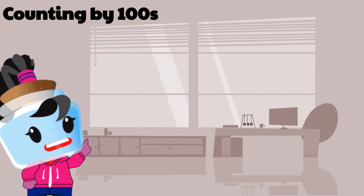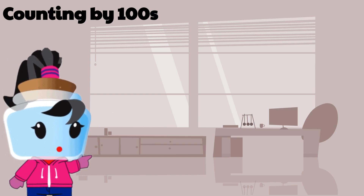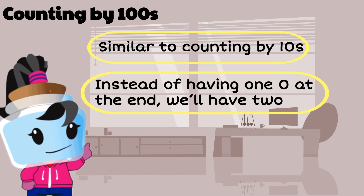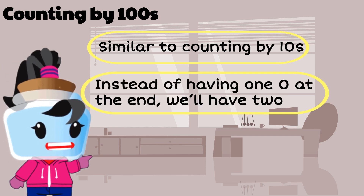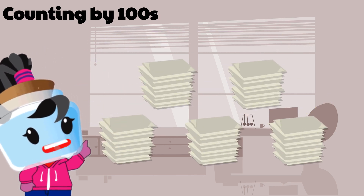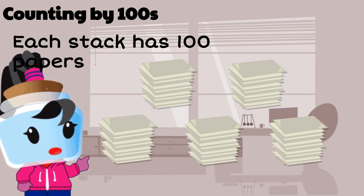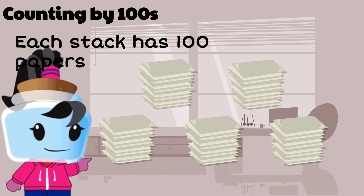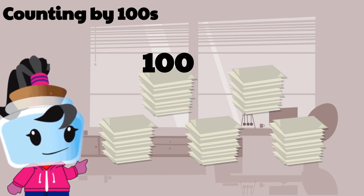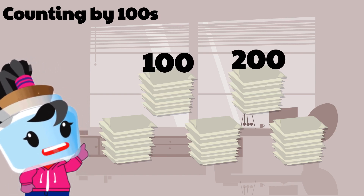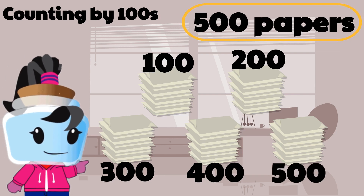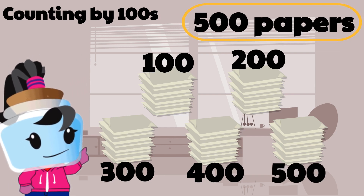Lastly, let's count by hundreds. This is very similar to counting by tens, though instead of having one zero at the end we'll have two. For example, let's count these papers — each stack has one hundred papers, so we have one hundred, two hundred, three hundred, four hundred, five hundred sheets of paper.